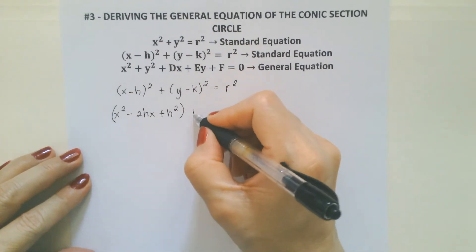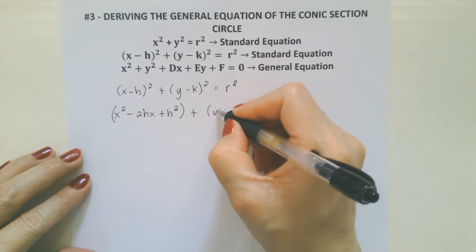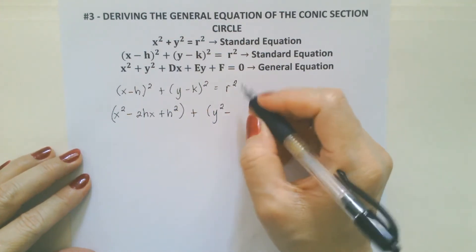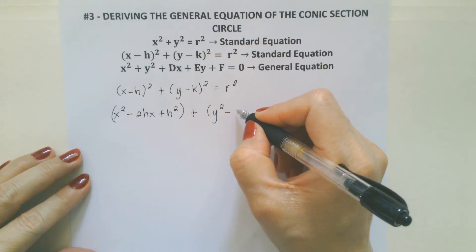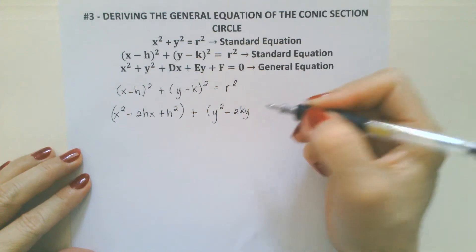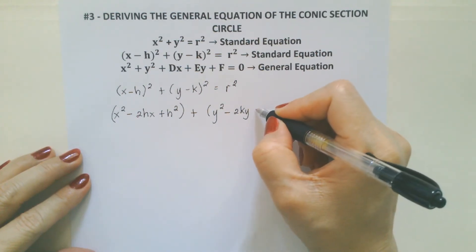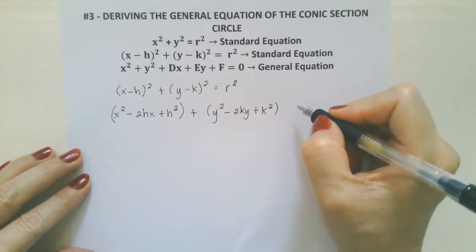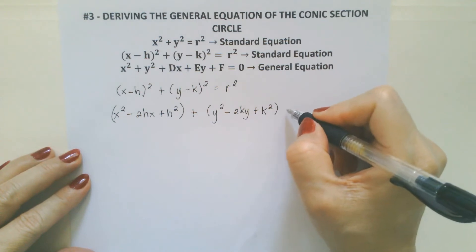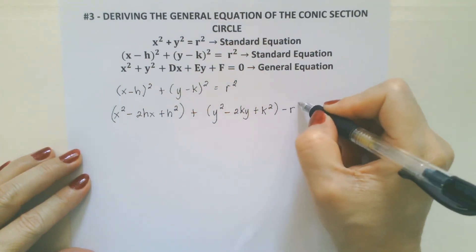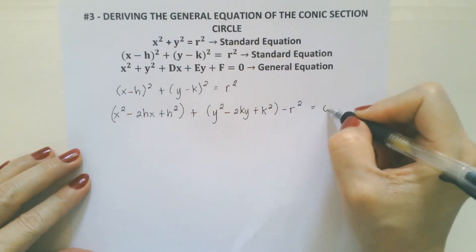The same goes with the second binomial. The first term has to be squared. Copy the sign. Multiply the first and the second term being ky, multiply it by 2, and it becomes 2ky. Then, the last term being negative squared becomes positive k squared. Then we're going to transpose r squared back to the left, and it becomes negative, equal to 0.